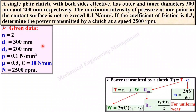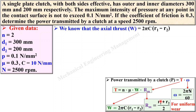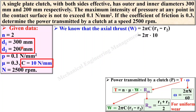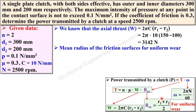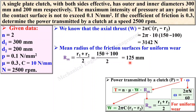Since this is uniform wear theory, we apply the force equation W = 2πc(r1 − r2). Putting c = 10 and the given values of r1 and r2, simplify to get W — the load or axial thrust — in Newtons. W = 3142 N. Now find rm: the mean radius of the friction surface for uniform wear theory is rm = (r1 + r2)/2. Putting in r1 and r2, simplify to get rm = 125 mm.